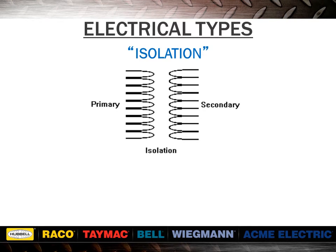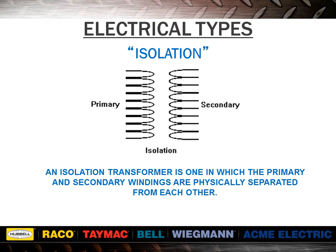Transformers have different electrical types associated with them. An isolation transformer is one in which the primary and secondary windings are physically separated from each other, sometimes referred to as insulated. In an isolation transformer, the output winding will be isolated or floating from earth ground unless bonded at time of installation.